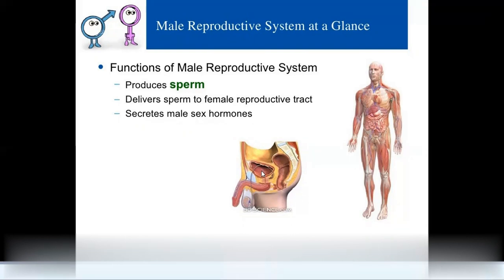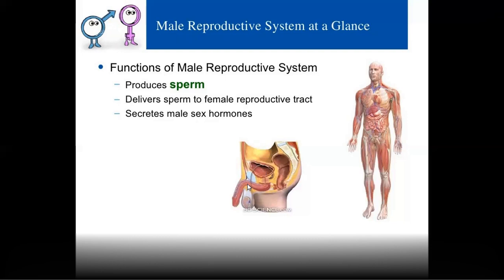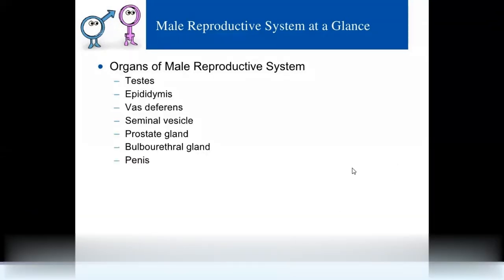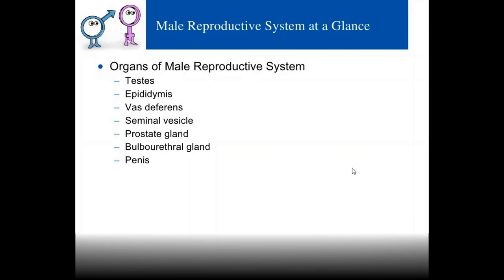The urethra is longest in males compared to females. The organs of the male reproductive system are: testes, epididymis, vas deferens, seminal vesicle, prostate gland, bulbo-urethral glands, and penis.